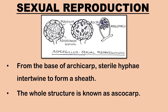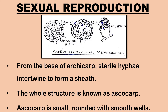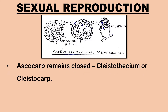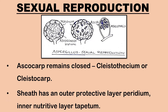The whole structure is known as an ascocarp. In Aspergillus, the ascocarp is small, rounded, with smooth walls. Since the ascocarp remains closed even at maturity, it is called the cleistothecium or cleistocarp. The sheath consists of an outer protective layer called the peridium and an inner layer called the tapetum, which is nutritive in function.